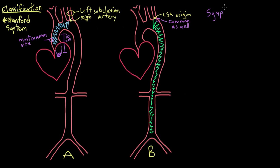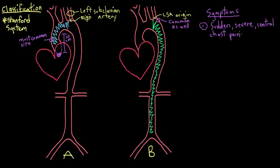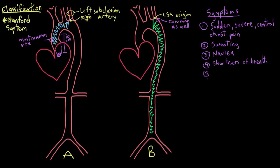Someone having an aortic dissection might experience a sudden onset of severe central chest pain that often radiates to the back — patients often describe a tearing toward the back type of pain. The pain can also radiate down the arms, similar to the symptoms of a myocardial infarct, or heart attack. Other symptoms include sweating, nausea, shortness of breath, weakness, or syncope — that's fainting. If the dissection is in the abdominal aorta, you might get abdominal pain that could radiate to your sides or toward your back.